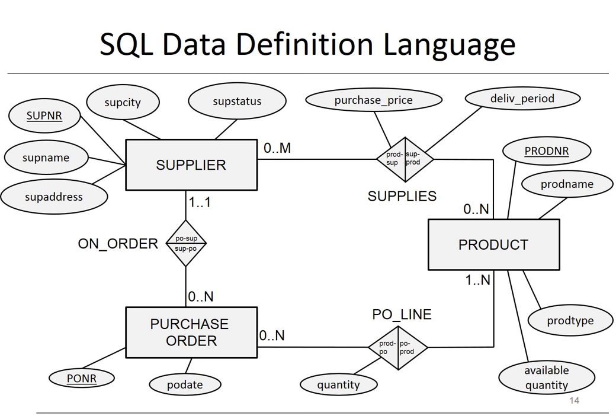Here you can see an ER model for a purchase order administration, which we will use to illustrate both SQL DDL and SQL DML. We have three entity types: supplier, purchase order, and product. A supplier has a unique supplier number as its key attribute type, and is also characterized by supplier name, supplier address, supplier city, and supplier status. A purchase order has a unique purchase order number as its key, and also has a purchase order date. A product has a unique product number as its key, and also has a product name, product type, and available quantity.